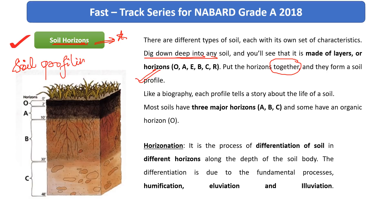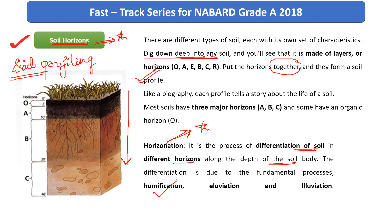There is also a term called horizonation. It is the process of differentiation of soil into different horizons along the depth of the soil body. So the parameter taken here is depth. This differentiation between different layers of the soil is due to various processes like humification, alluviation, and illuviation. We shall also be having a look at what alluviation and illuviation mean.